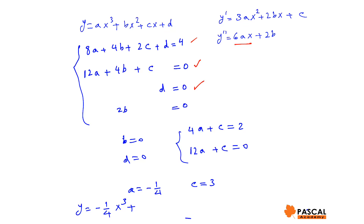It's a simple system of equations that we can easily solve. From the third and fourth equations, B and D are 0. We plug them into the first and second equations and find A equals negative 1/4 and C equals 3.